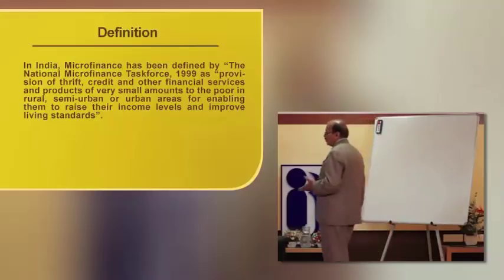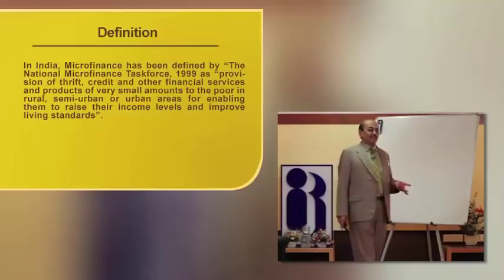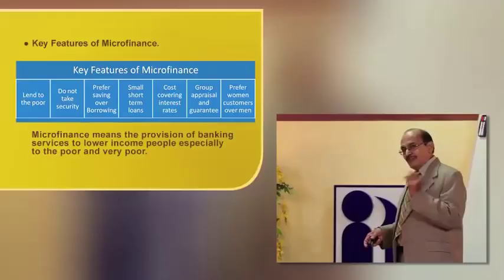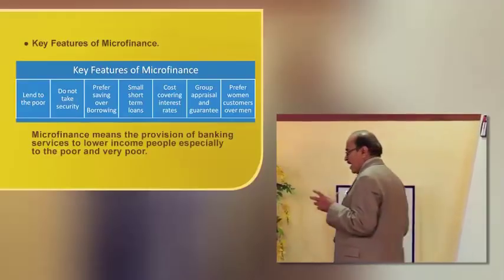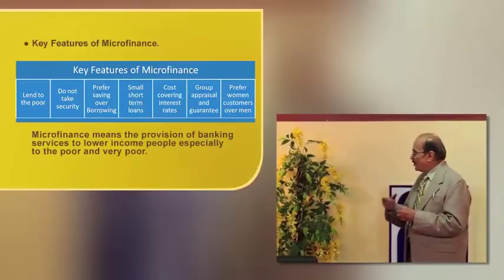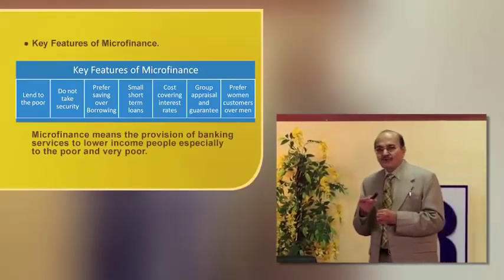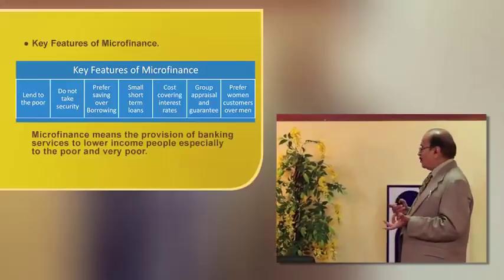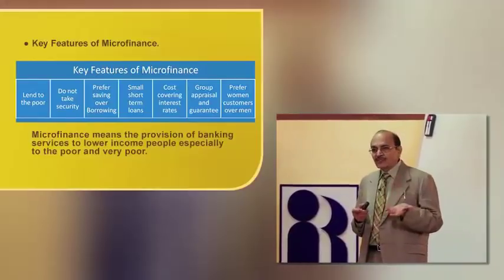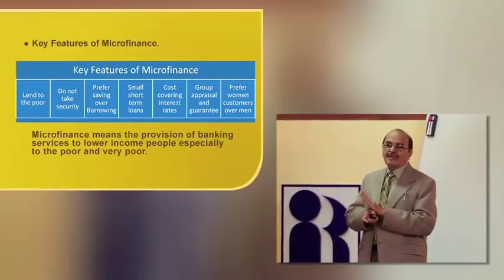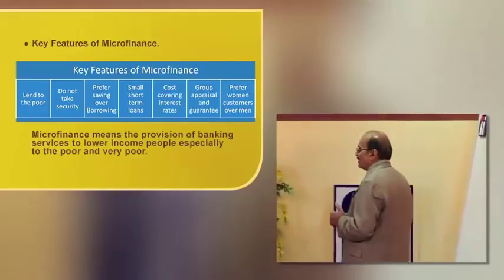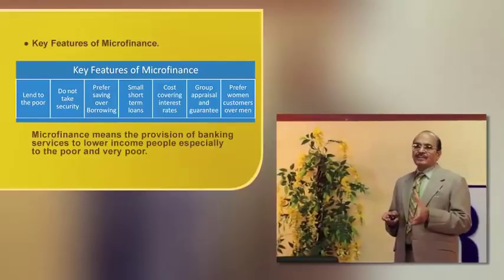Number one: lend to the poor. As far as possible, don't take security because they don't have any security to offer. Prefer savings over borrowings — that means at least have some group where they can save first before start borrowing. Small short-term loans — that is the requirement of the poor people. And more importantly, if the rate of interest is very high, it is going to be uneconomical, so cost-covering interest rates should be determined while extending the loans.